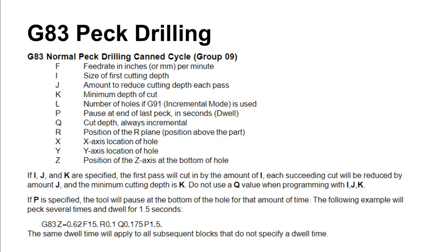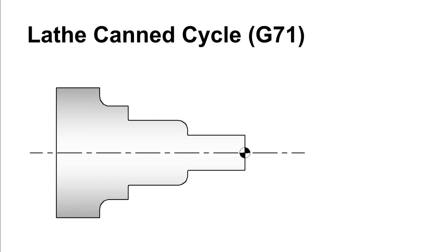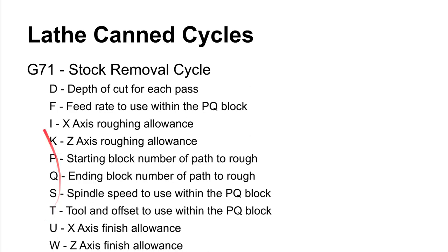To cancel a peck drilling cycle, you need to use G80, after which you can move around with G01 using X and Y freely. You can also have canned cycles on a lathe. The G71 is the one we saw earlier — cutting a profile where the tool goes back and forth, cutting layer by layer to remove material in a sequence of steps rather than trying to remove it all in one pass.